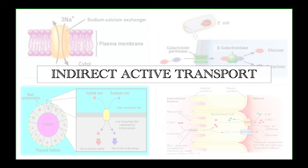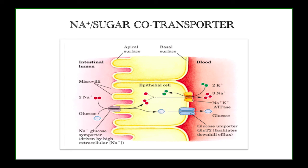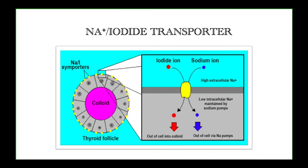Indirect active transport is called 'indirect' because direct movement of ions does not take place — there is some outer binding and inner release. This type is seen in the sodium-sugar co-transporter in the small intestine's epithelium, where sugar and sodium ions bind with a transport protein and are released into the epithelial cells. The sodium ions then move out through a separate channel, exchanged by potassium ions — three sodium going in, two potassium coming out — while glucose is released through a separate channel. This is the symport mechanism.